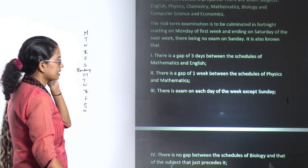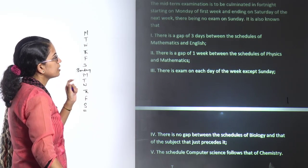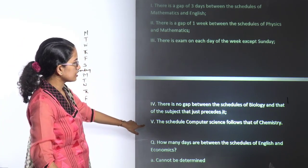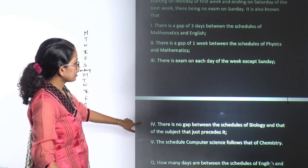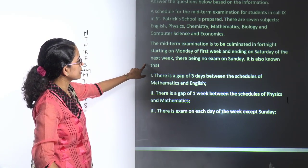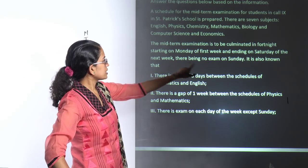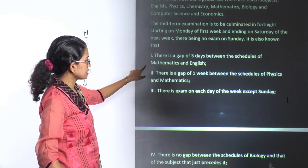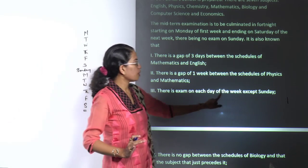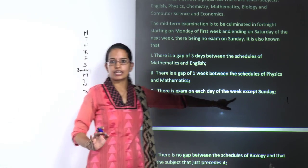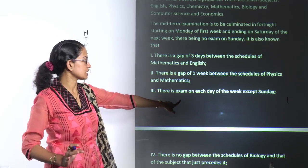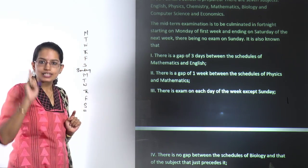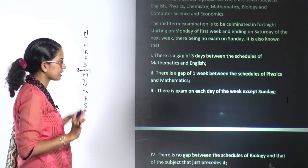There are some statements given. The first is that for one week there is continuous examination. For the next week there is no exam on Sunday — there is exam on each day of the week except Sunday. That means for one of the two weeks there is continuous examination.